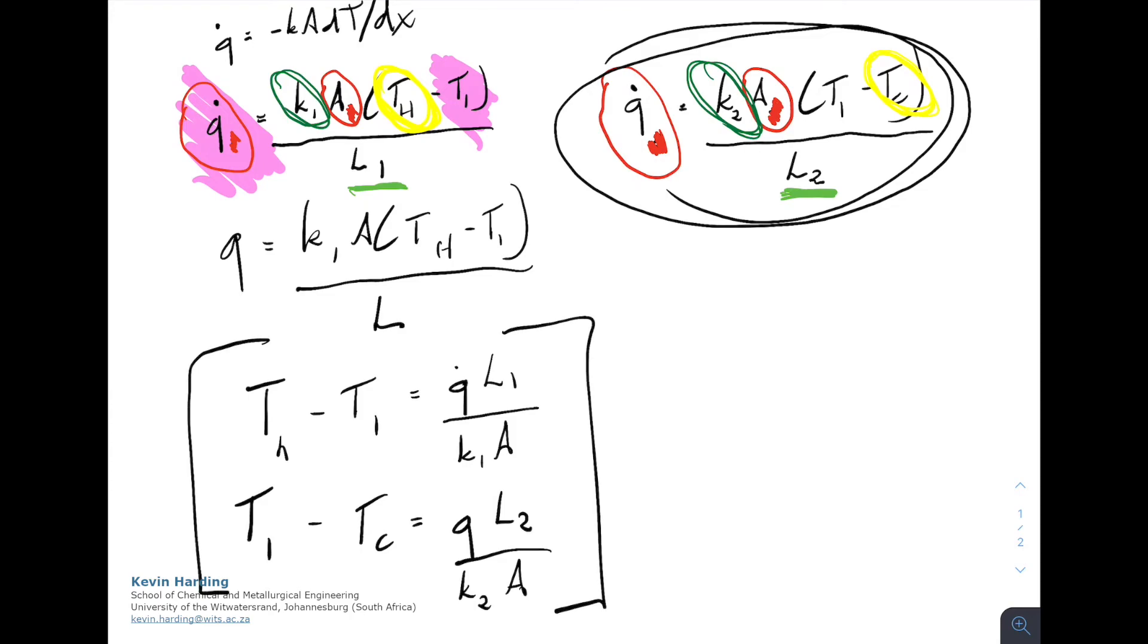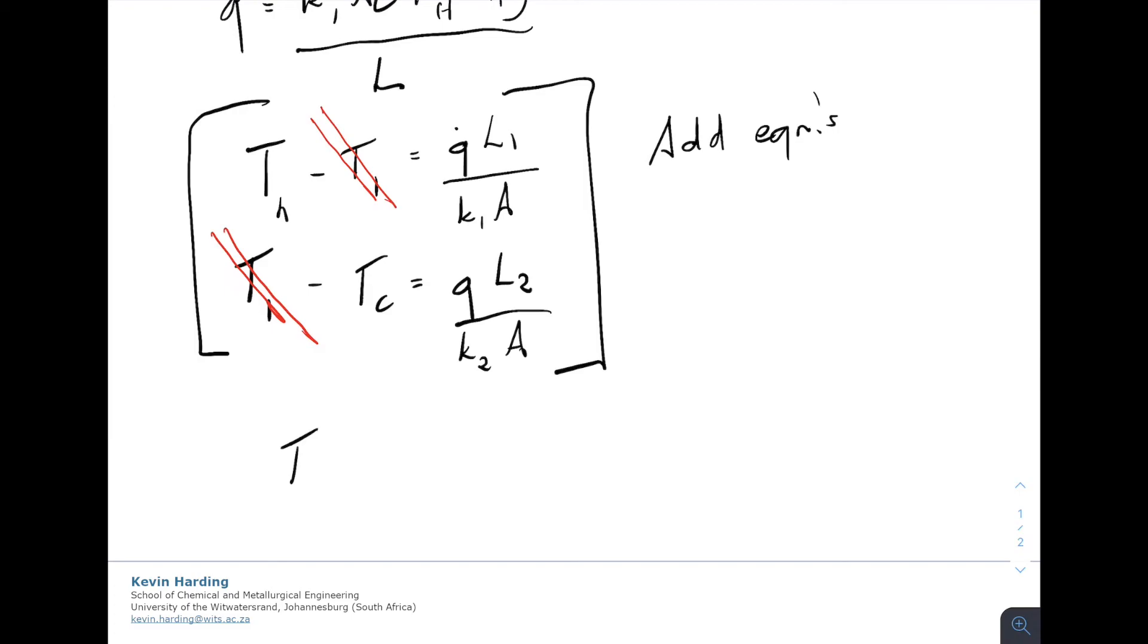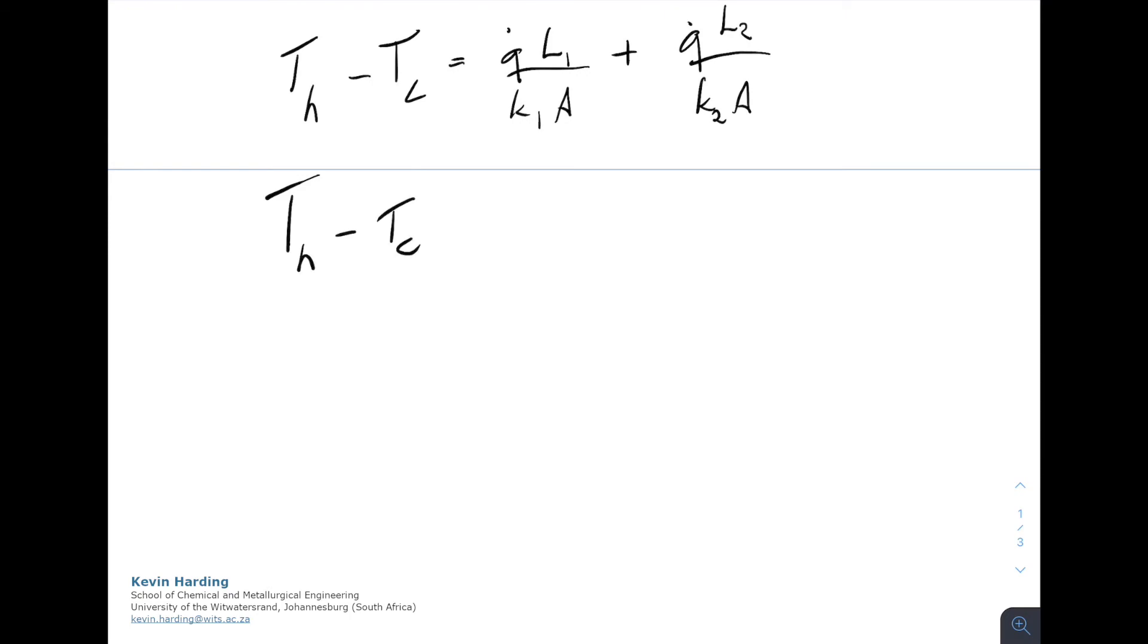The simplest way is to add the equations. Temperature one falls away because there's a negative on top and positive at the bottom. On the left we have T hot minus T cold equals Q L1 over K1 A plus Q L2 over K2 A. More commonly, this is written as delta T equals Q over A times L1 over K1 plus L2 over K2.